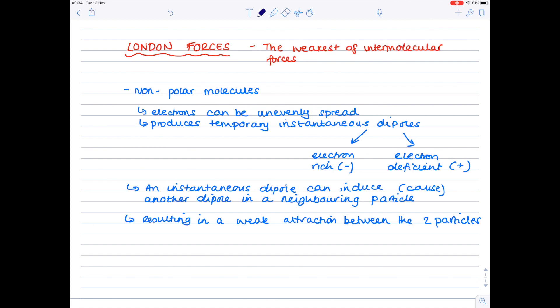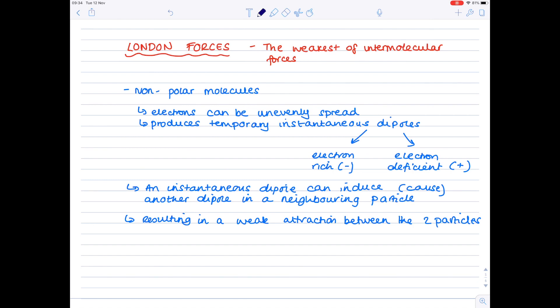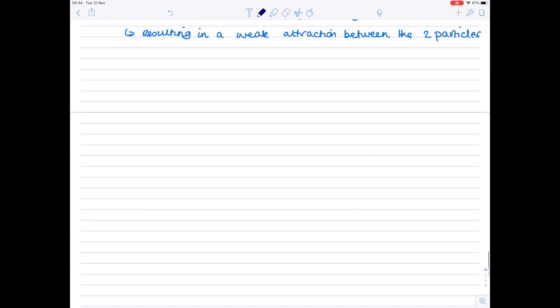Because this is a fairly complicated concept to understand, let's have a look at hydrogen, which is an example of a molecule that has London forces. So hydrogen is diatomic, remember, consists of two atoms, and because there's only one electron in the outer shell of hydrogen, you end up with this situation.